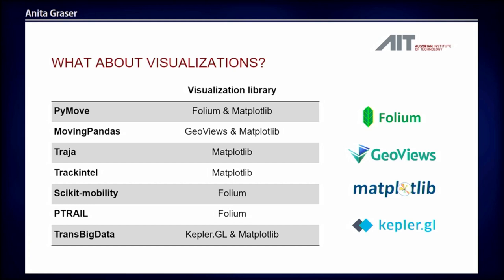I decided against showing too much code, and instead wanted to focus on visualization — because with spatial data there are so many potential errors that you only see once you visualize them. I took quite a lot of time choosing which visualization library to use. The options are: Folium, GeoViews based on Bokeh, Matplotlib for static visualizations, and KeplerGL for fancy potentially 3D visualizations. These are the four visualization libraries used by the movement analysis libraries I showed earlier. There is no agreed-upon solution so far, and they all live happily next to each other.